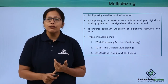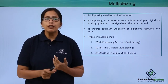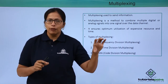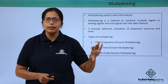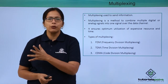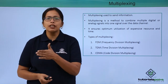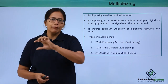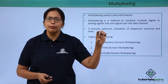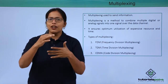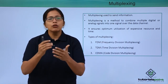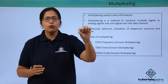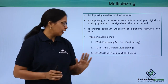FDM stands for Frequency Division Multiplexing. The entire spectrum over which data can be sent has different frequencies, and each different user is assigned a different frequency. So at the same time, all the different frequencies can be sent. Since the data is traveling on different frequencies, the receiver can decipher which user is sending which data.